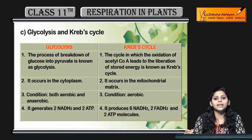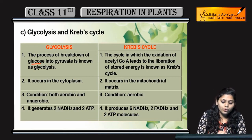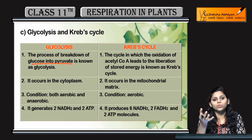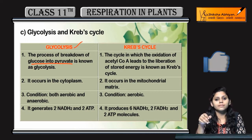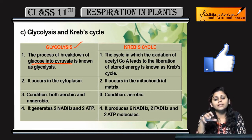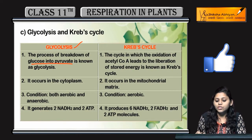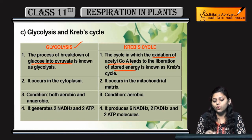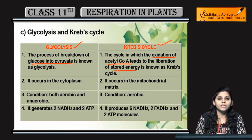Next is glycolysis versus the Kreb's cycle. In glycolysis, glucose is converted to pyruvate. The Kreb's cycle is a cyclic process in which oxidation of acetyl CoA occurs, liberating stored energy.